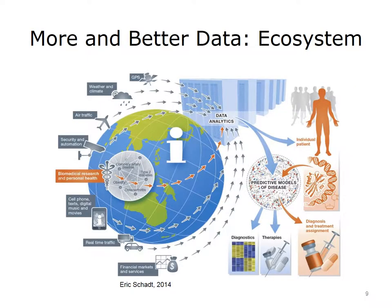You can't deliver risk scores or models without data. Data has historically come from a few sources, but the data ecosystem, shown here in an image by Eric Shadd, is growing. Global positioning systems, weather, traffic, and other sources will be combined with increasing amounts of biomedical and personal health data to produce better predictive models of disease for diagnosis, therapy selection, and treatment.